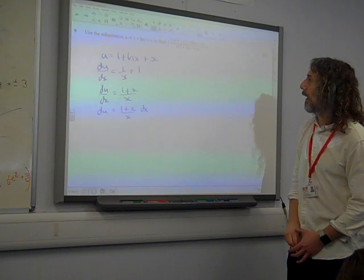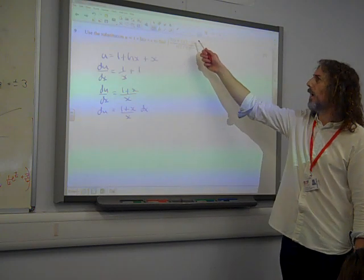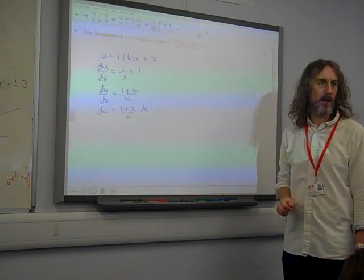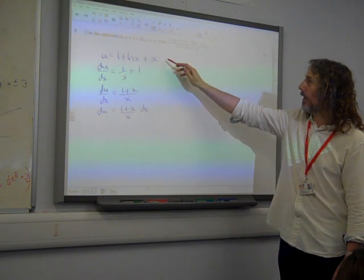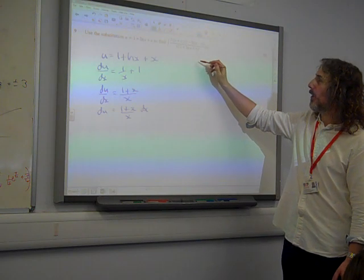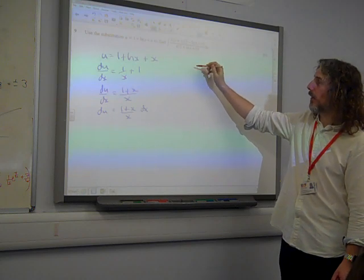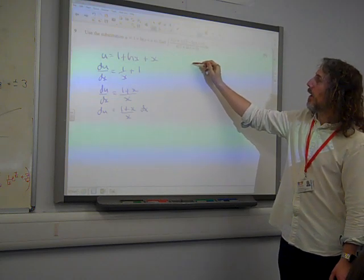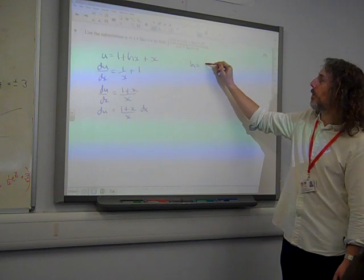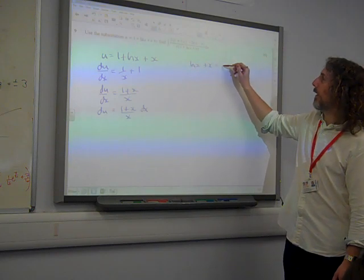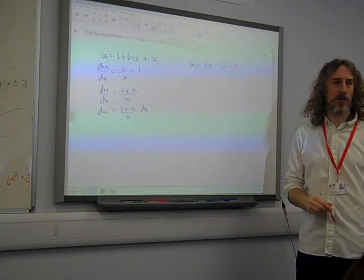Right. What else are we going to have to deal with? We've got a 1 minus ln(x) minus x. Well, if that's what that says there, then how could we rearrange that? We could say that ln(x) plus x is u minus 1. We could rearrange it to get that.